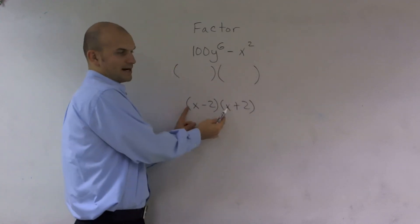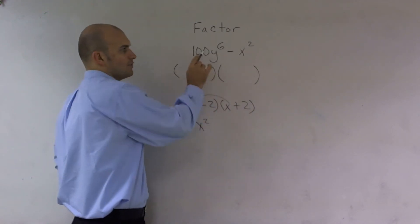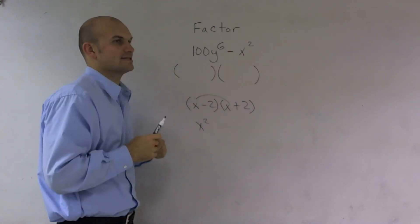Well, remember, you're going to multiply these two terms. These two terms give you your first term, right? So I think of what two numbers could I split that would give 100 and y to the sixth.